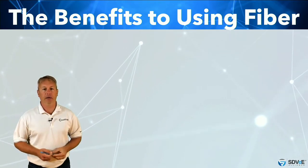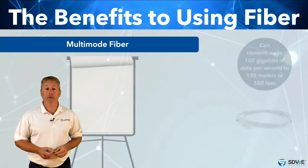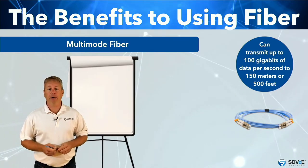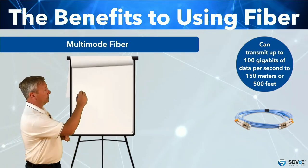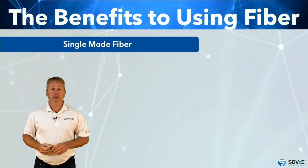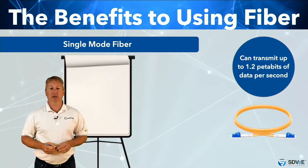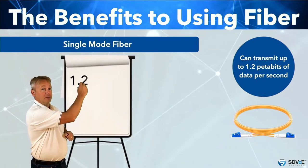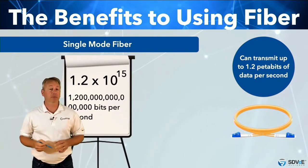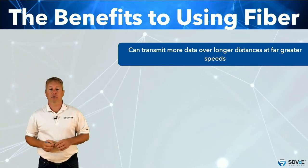Here are a couple of interesting facts about fiber. Multi-mode fiber can transmit 100 gigabits of data per second up to approximately 150 meters or 500 feet — that's 100 times 10 to the power of 9 bits per second. Single-mode fiber can theoretically transmit 1.2 petabits of data per second up to an indefinite distance — that's 1.2 times 10 to the power of 15 bits per second.